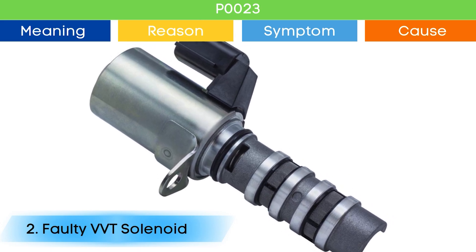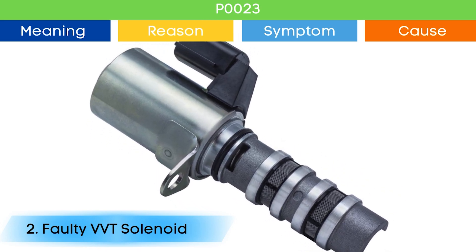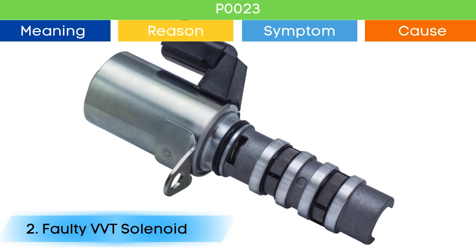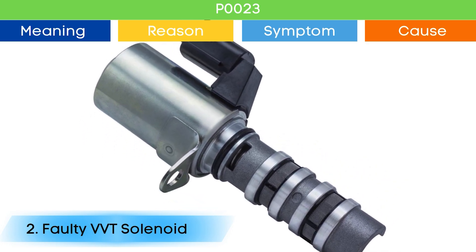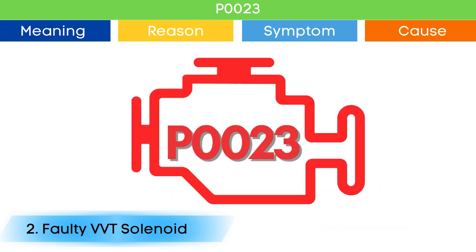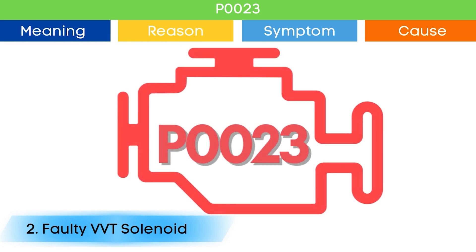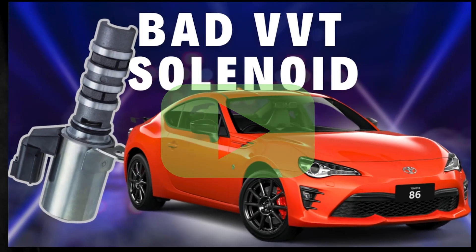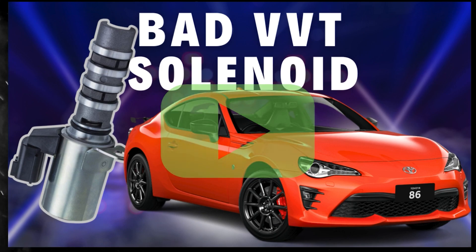Cause number two: bad VVT solenoid. Due to a bad VVT solenoid, camshaft position advance and delay may not work properly, which may trigger P1023 and other OBD-2 codes related to the VVT solenoid, along with symptoms of a bad VVT solenoid. Check our detailed video to learn more — link in the corner.